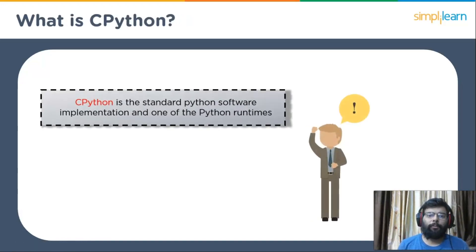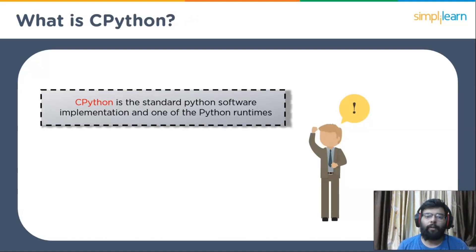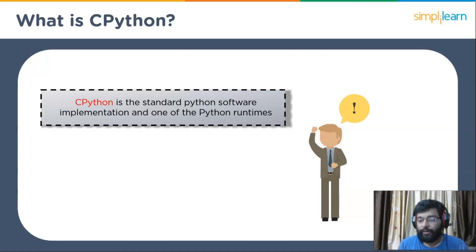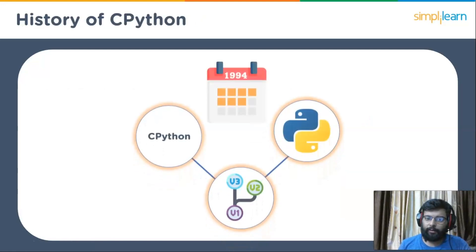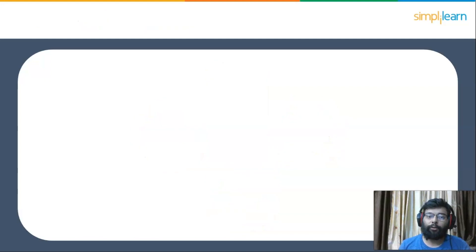The default implementation of the Python programming language is CPython, and it is one of the Python runtimes. It is directly downloaded from python.org, written in the C programming language, and it also executes the Python programming language. The first version of CPython was released in 1994 by the Python developer community.